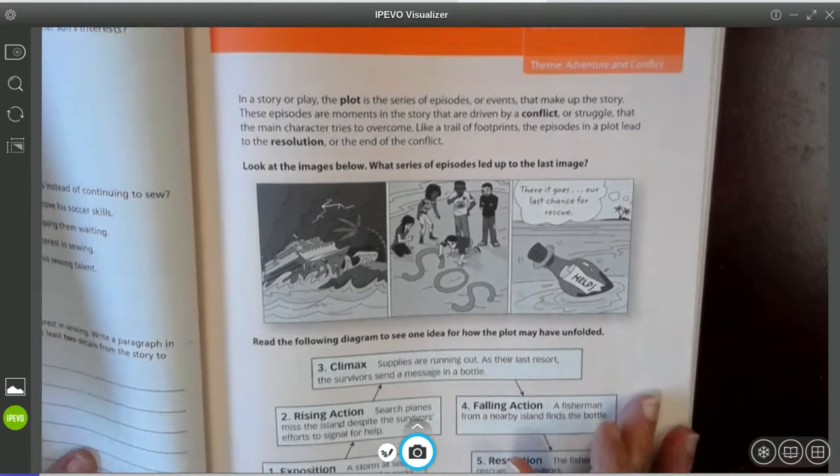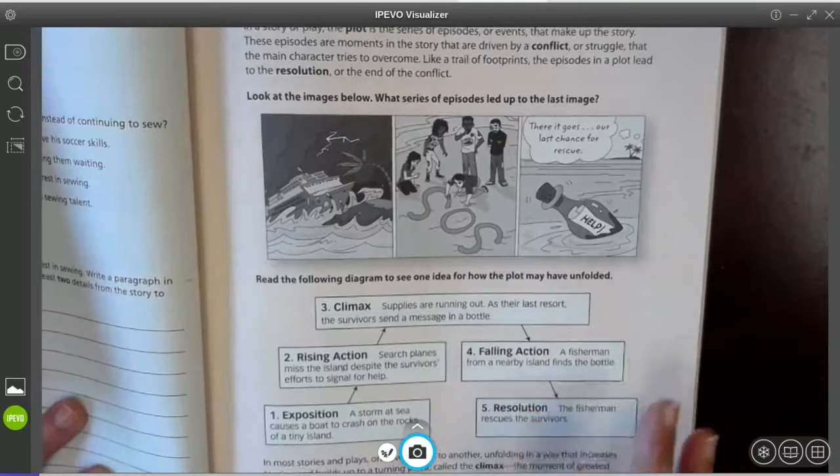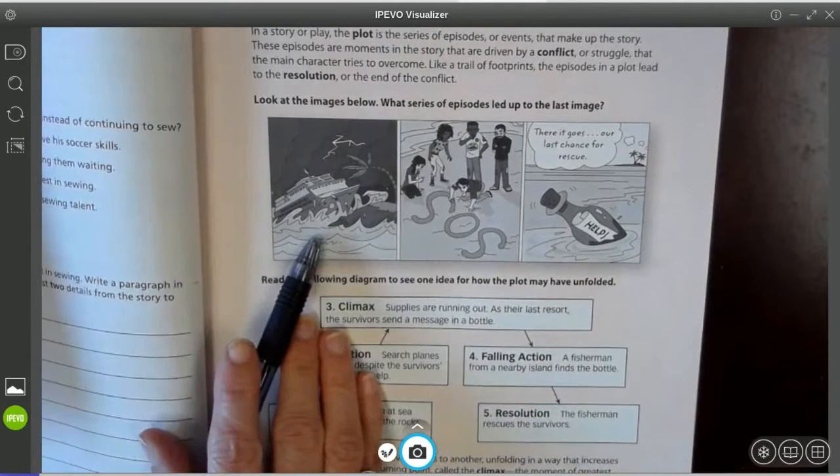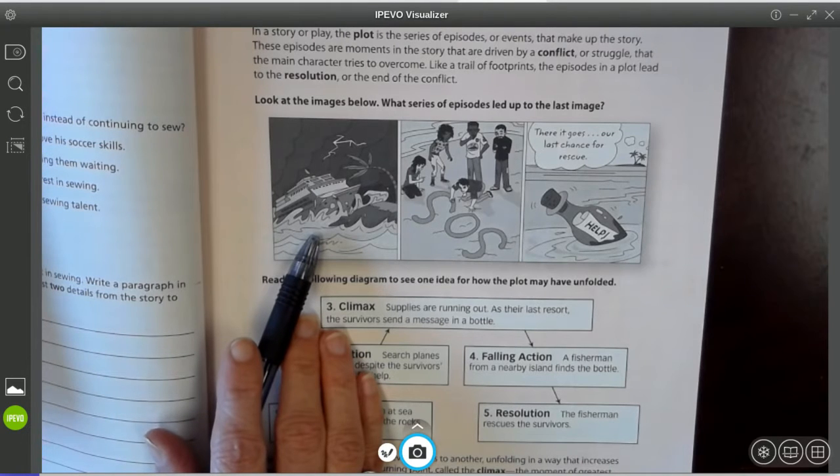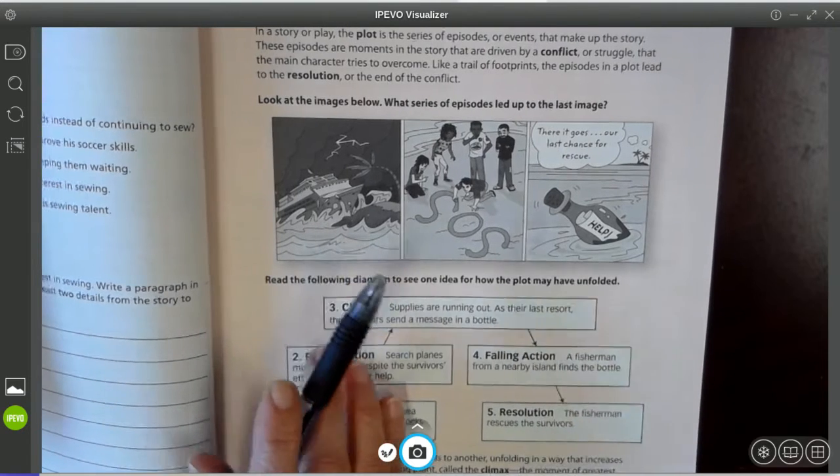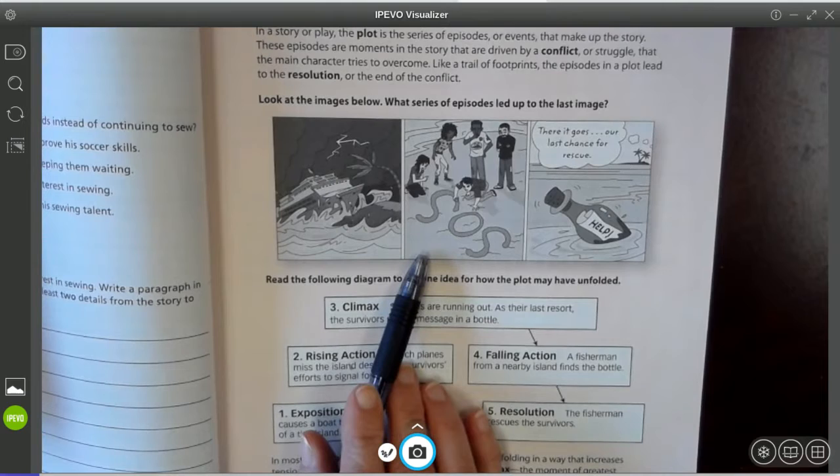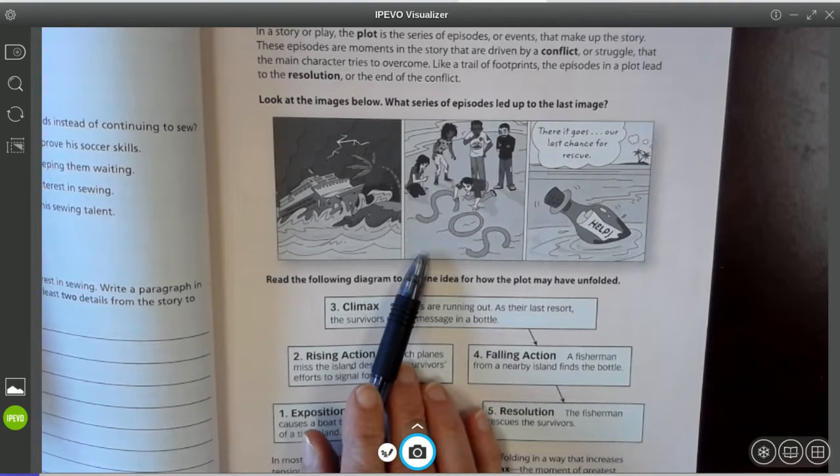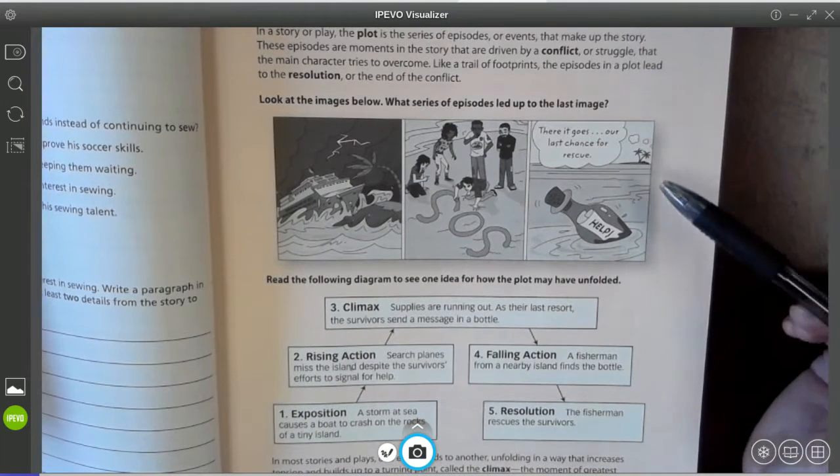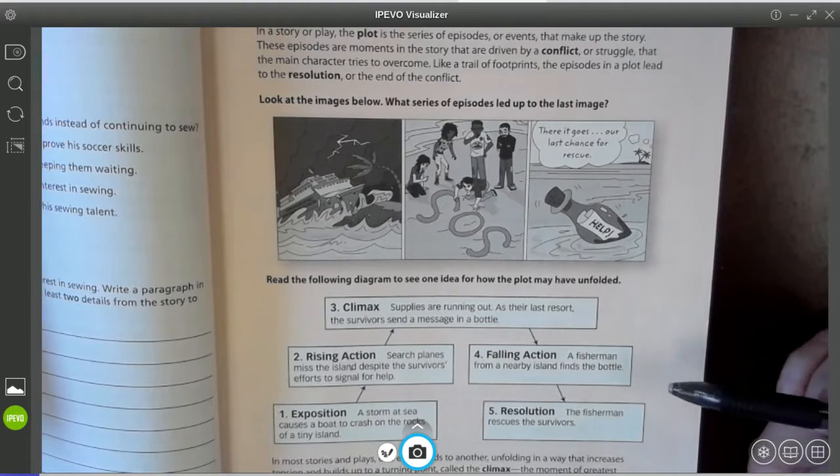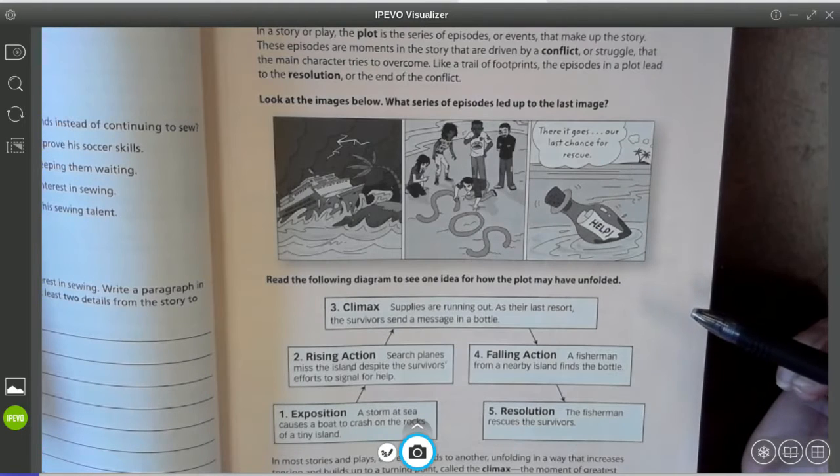So let's take a look at these pictures. So when you're looking at these images, the first thing we notice is that there was a storm. And when the storm at sea came about, it caused the boat to crash. And then these survivors are faced with the problem of how to get home. So they write a message to signal for help. And then you look here and it says, there it goes, our last chance for rescue. So they send off their message for help.